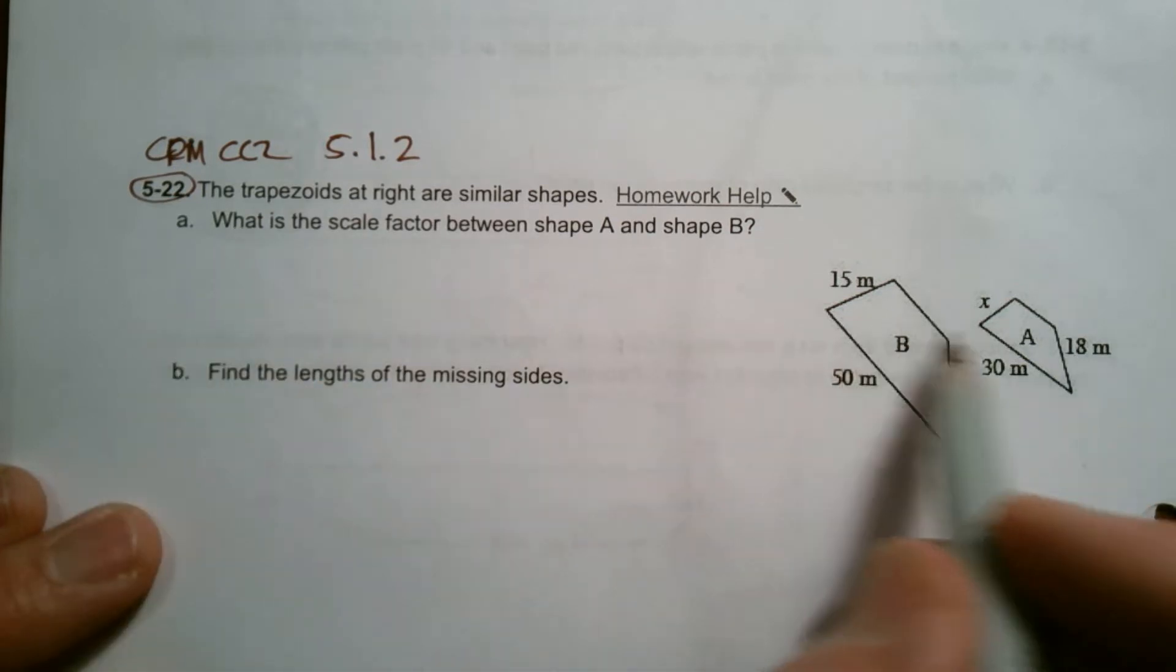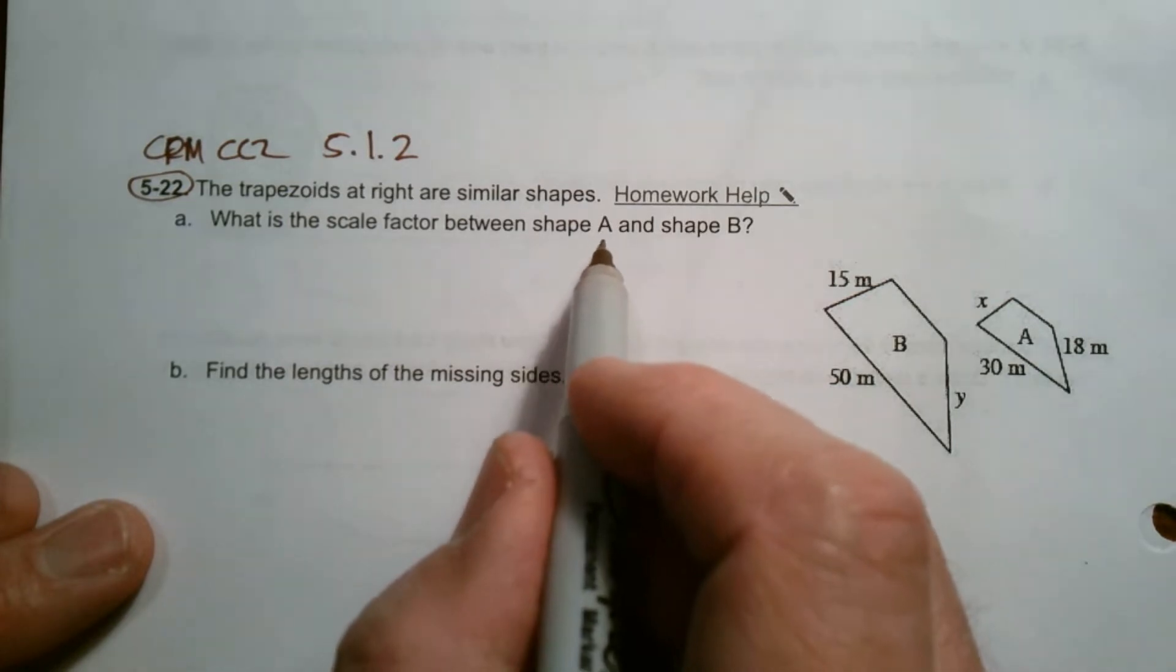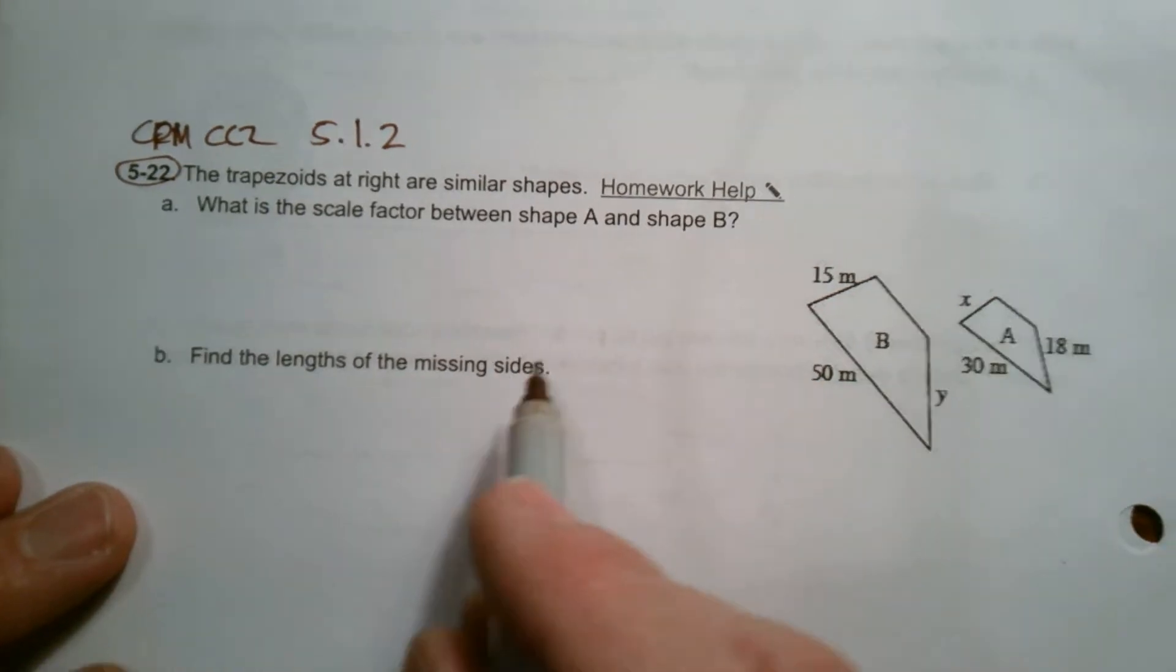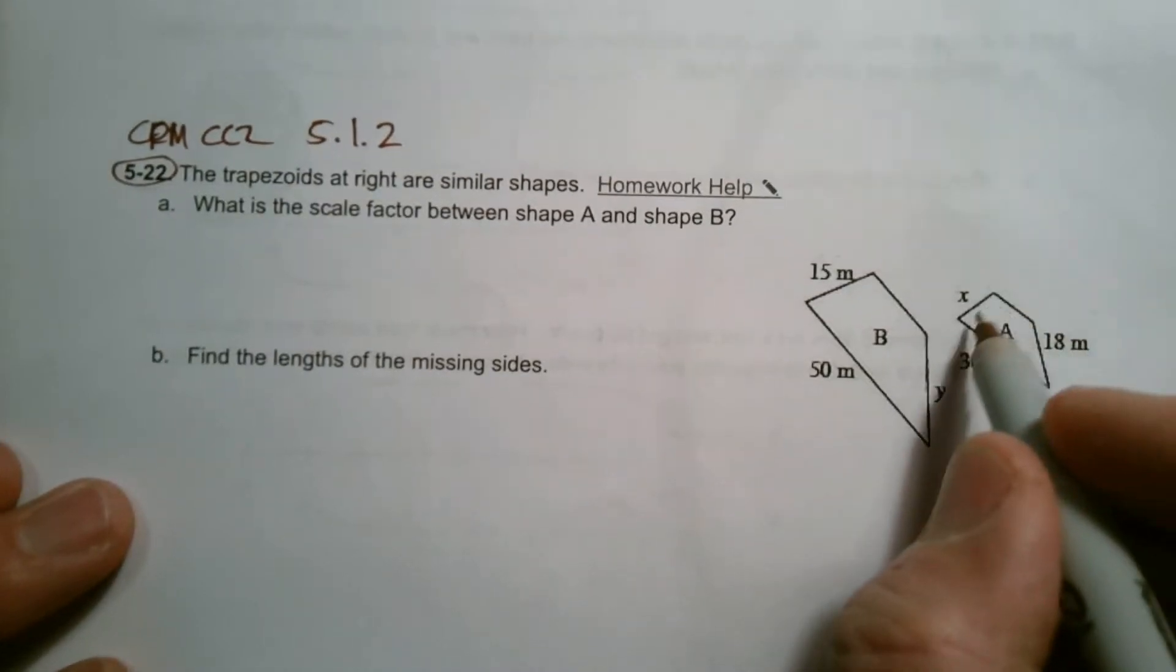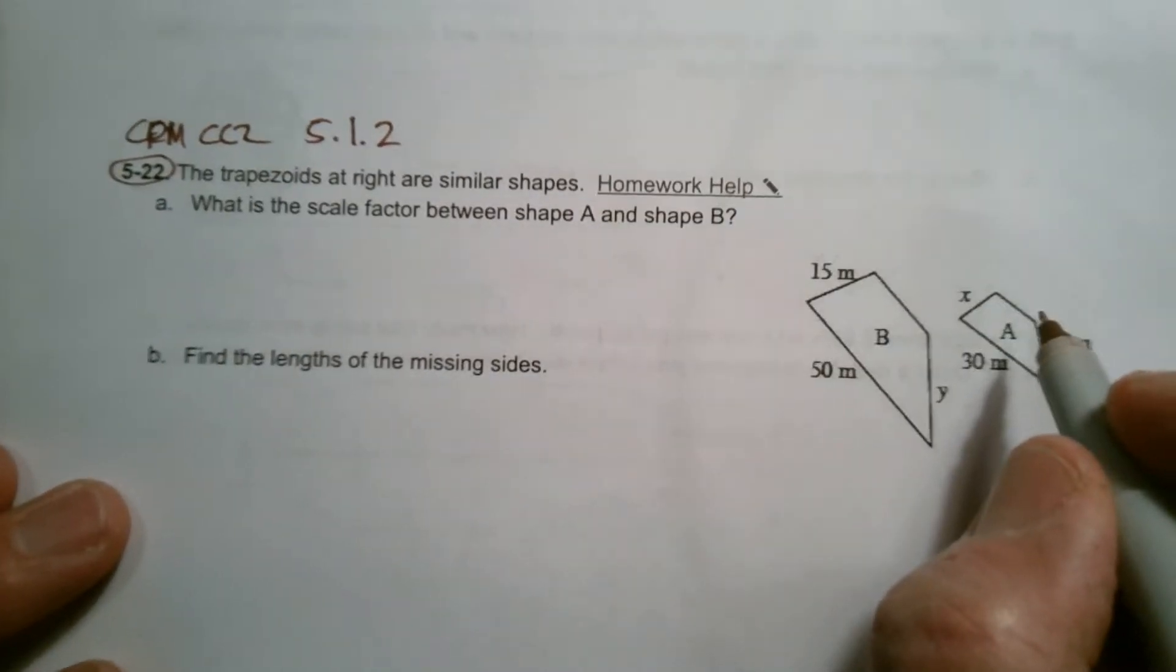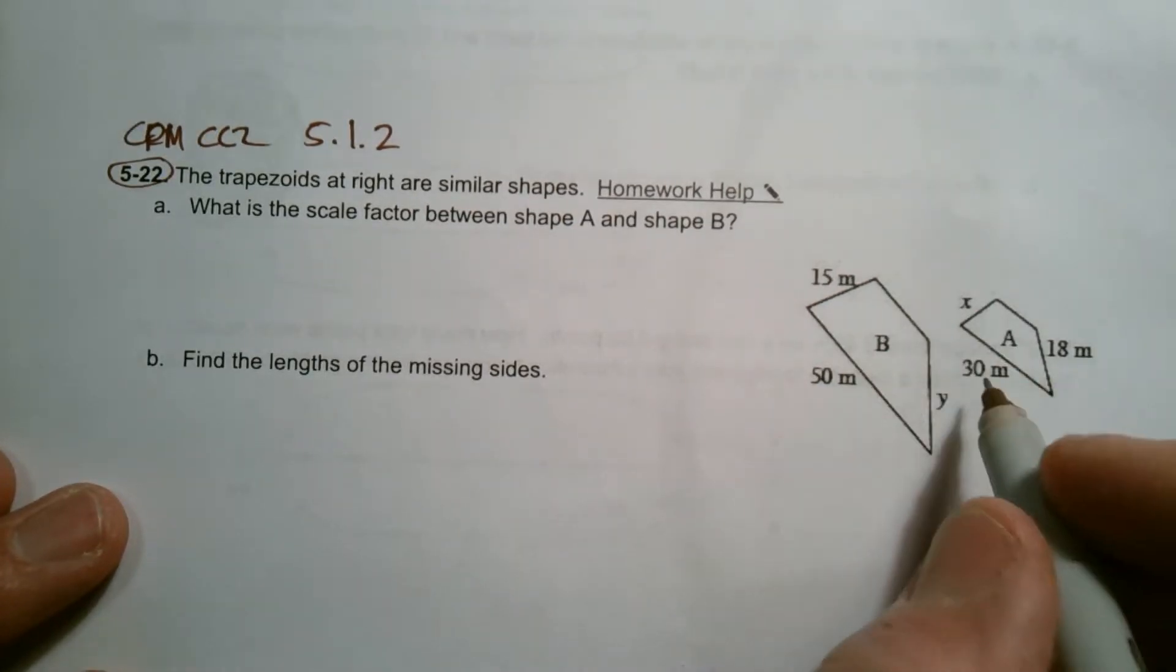So we're looking at trapezoids. Here's my trapezoid A, trapezoid B. It wants to know what's the scale factor between shape A and B. So I would assume that A is my original and B is my copy, just for the fact that this one's A and that one's B alphabetically.